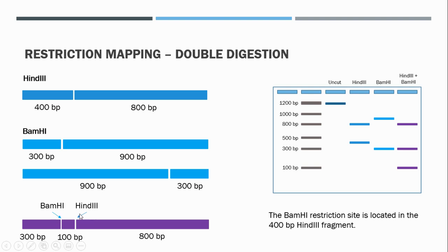This tells us the position of the BamHI and HindIII restriction sites in relation to each other. We can continue this with various combinations of restriction enzymes — digesting with HindIII and another enzyme, identifying the position of that enzyme in relation to HindIII and BamHI — and using these combinations we can draw a map showing the position of each restriction site within the linear fragment.